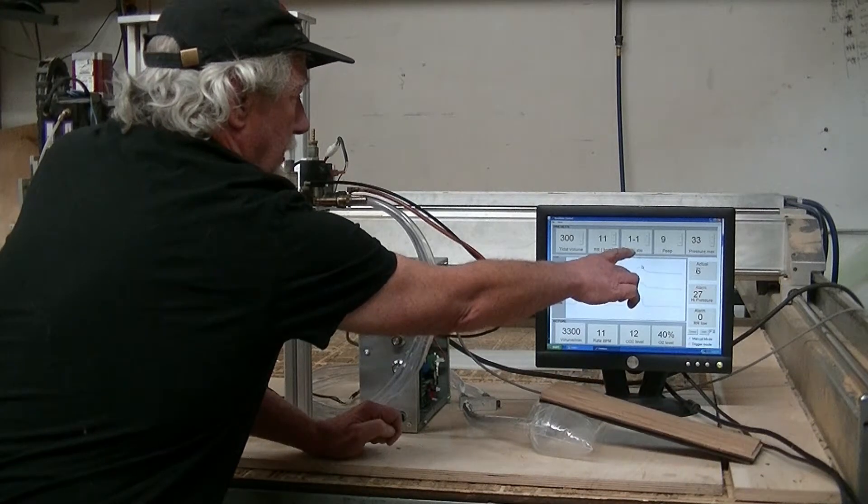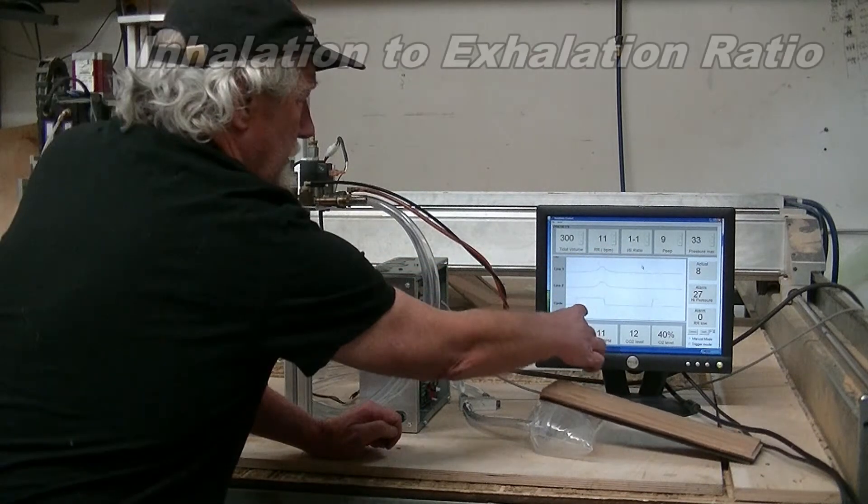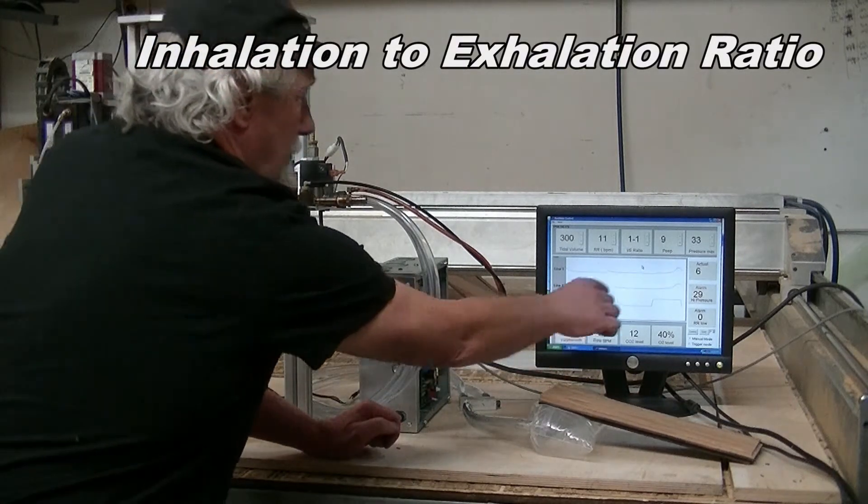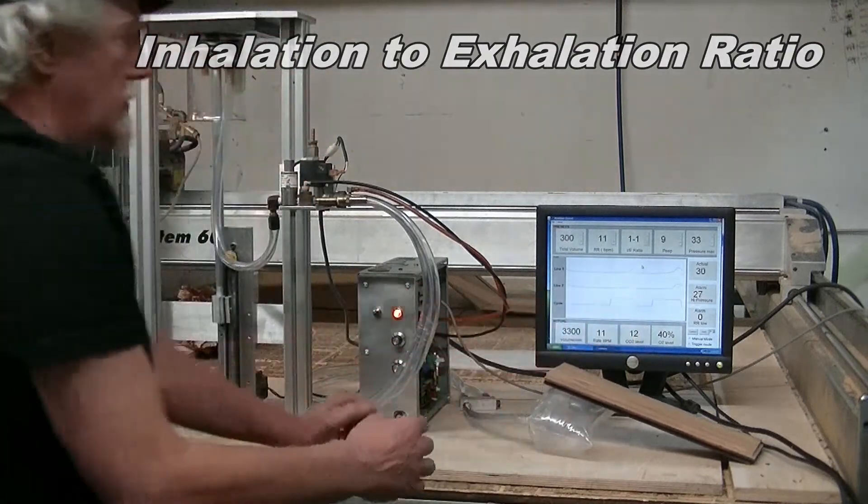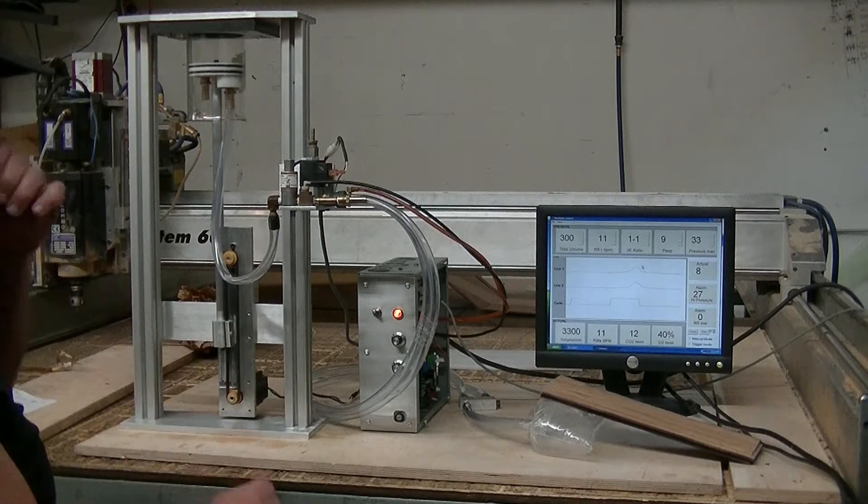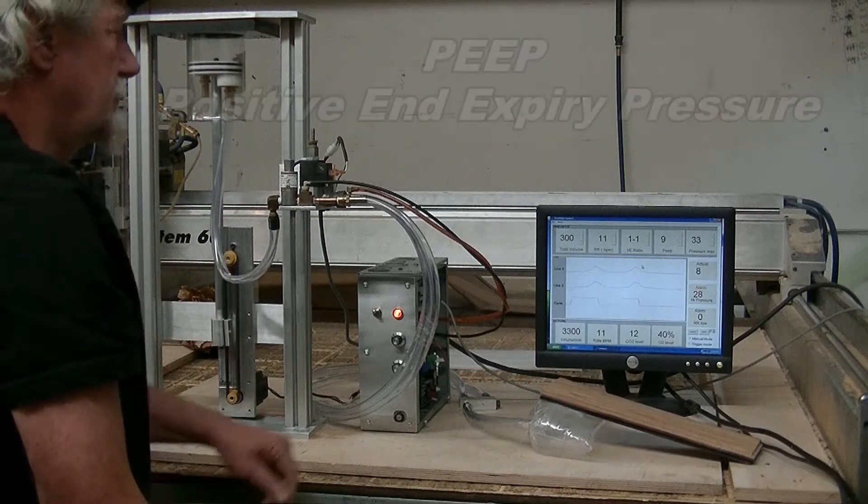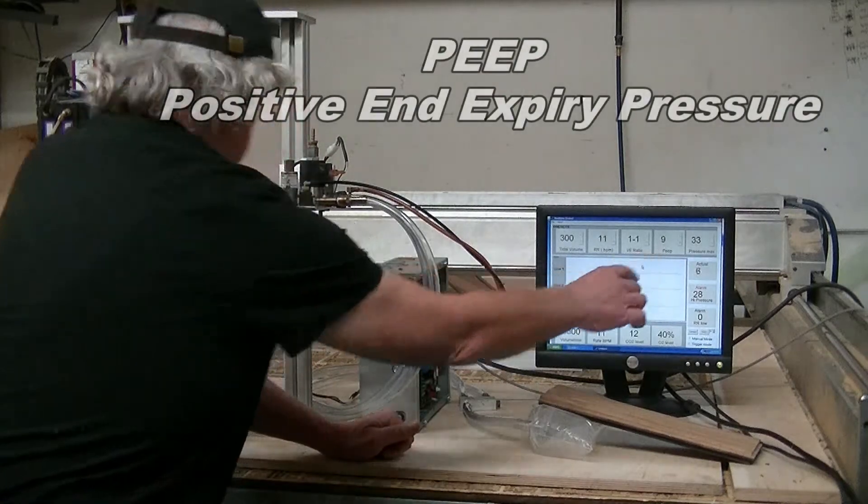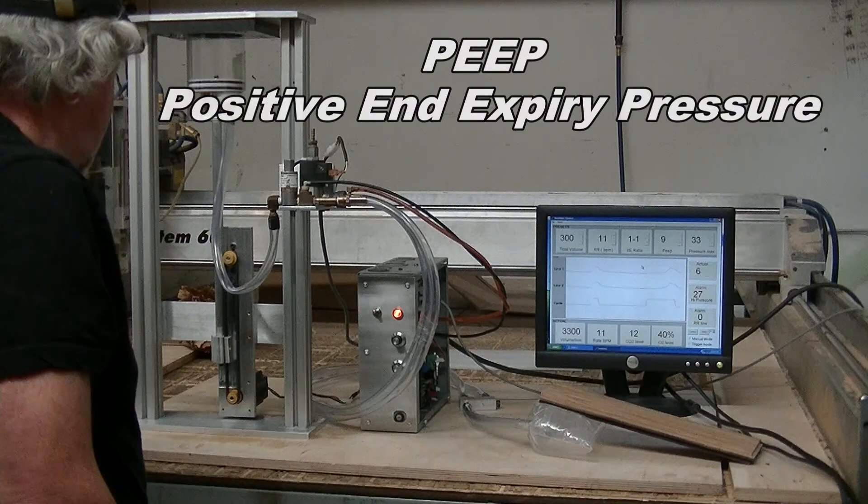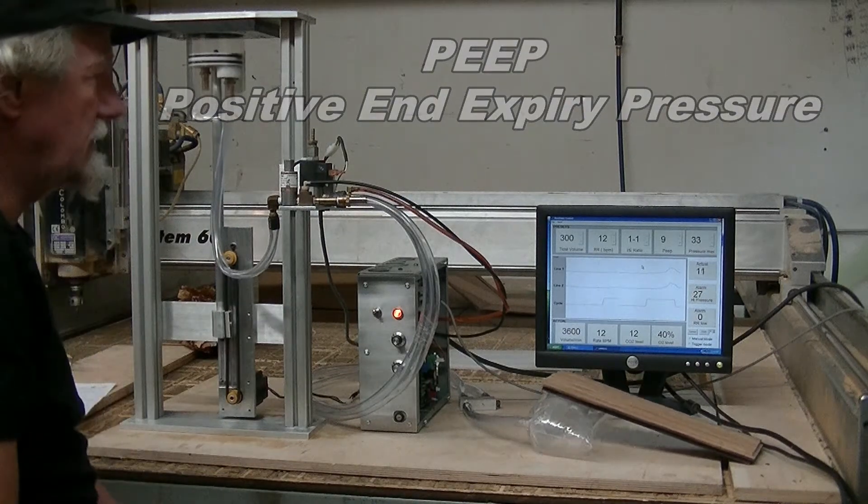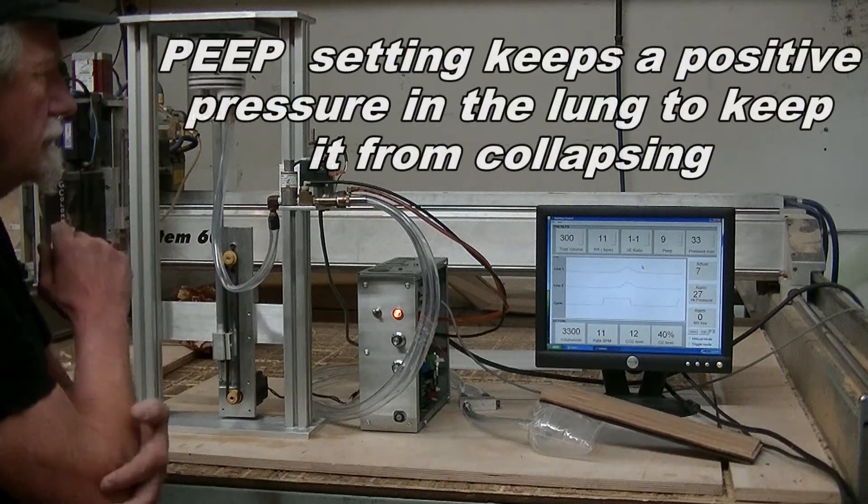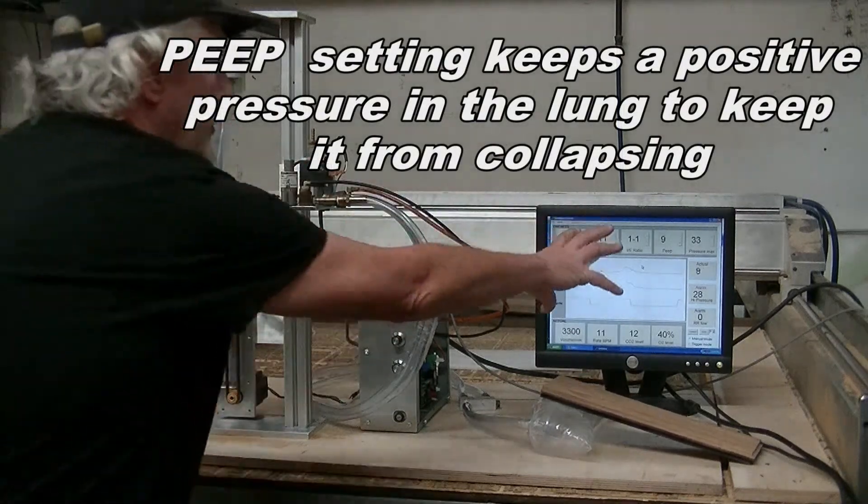The inhalation to exhalation ratio, and that is, this cycle means that's going up. If the piston's going up, that means the piston's going down. So it's the ratio of the uptime to the down time, to the pressure cycle. And then the P is the positive end expiry pressure. So that's the resting pressure in the system. And all these are variable now.